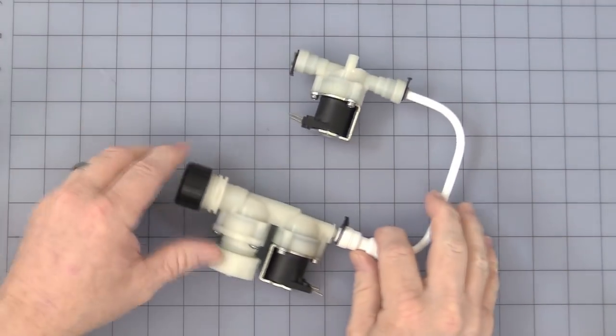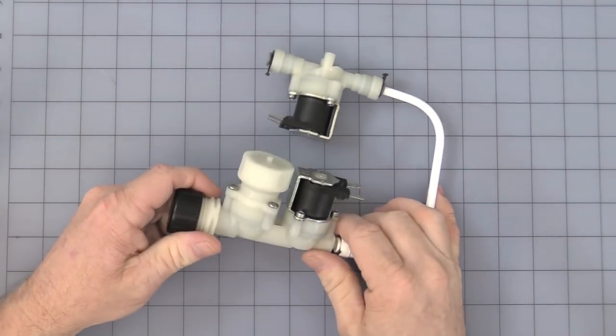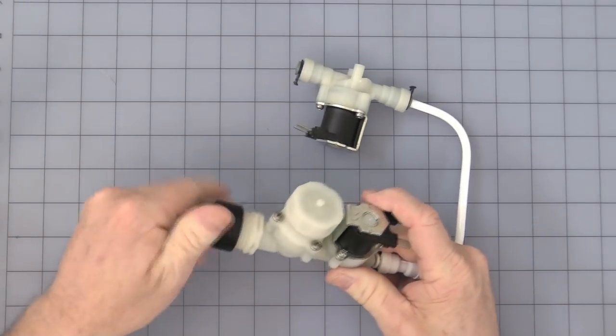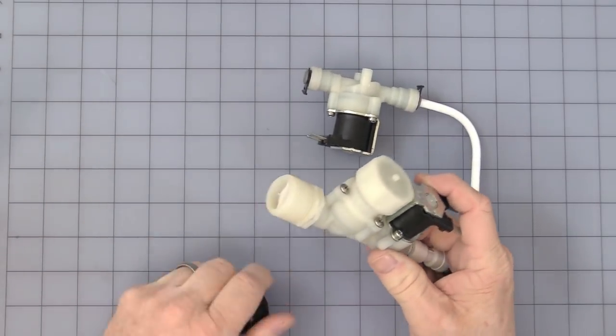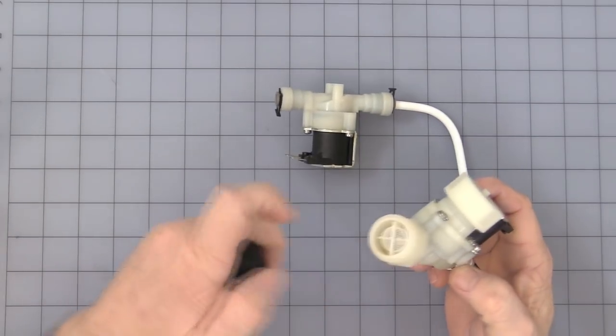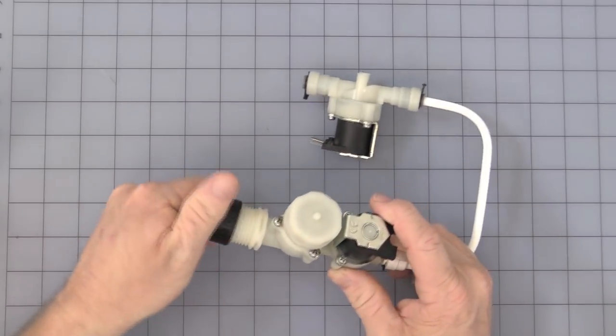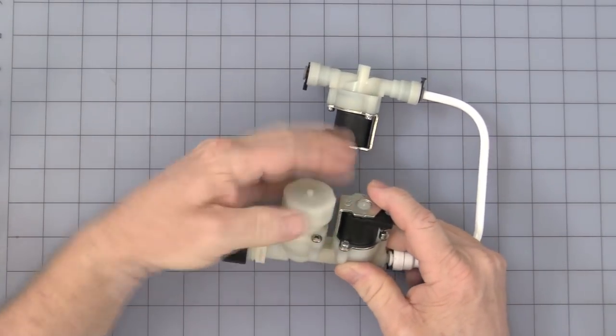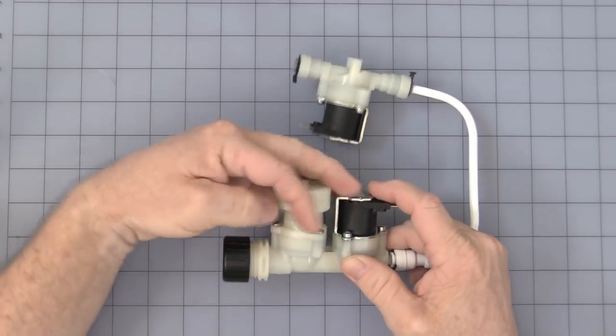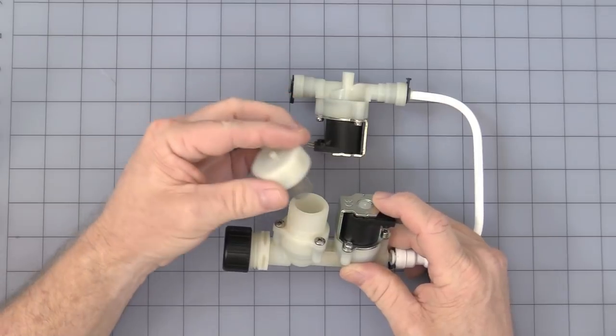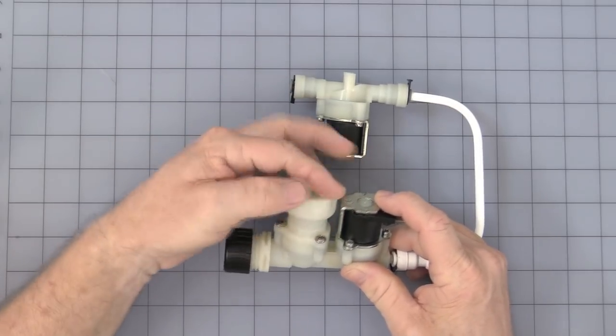This one is the inlet. That is a standard three-quarter inch MGH garden hose attachment. As you see, it has a little plastic filter on the inside. This valve on the inlet also has an additional screen filter, I guess for a little added protection.